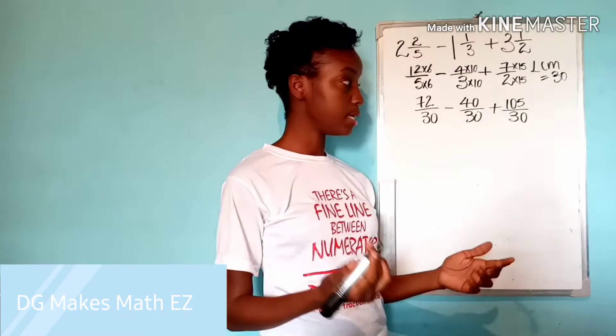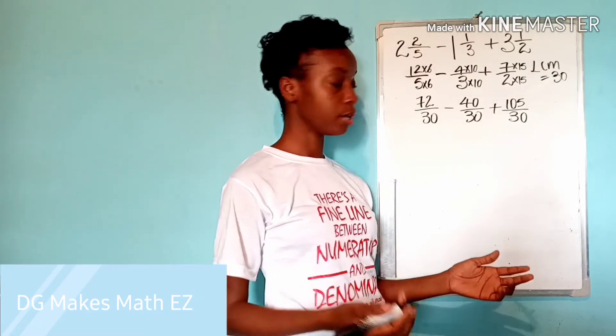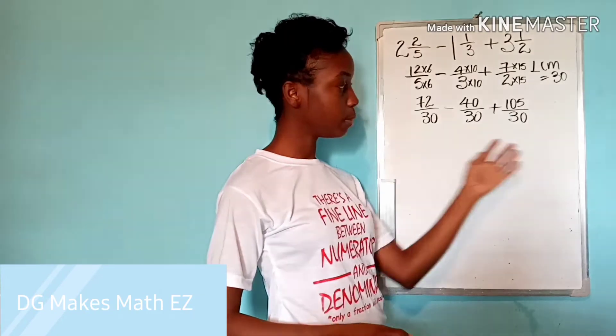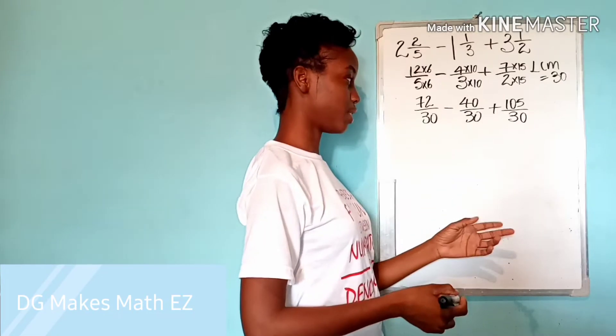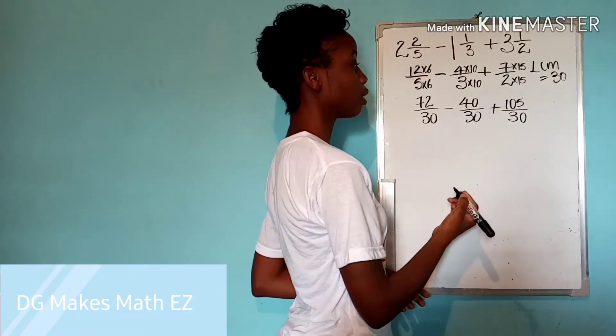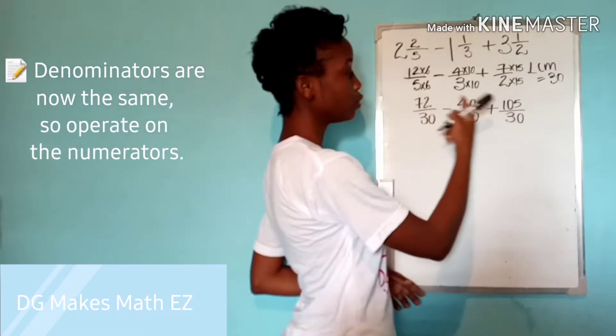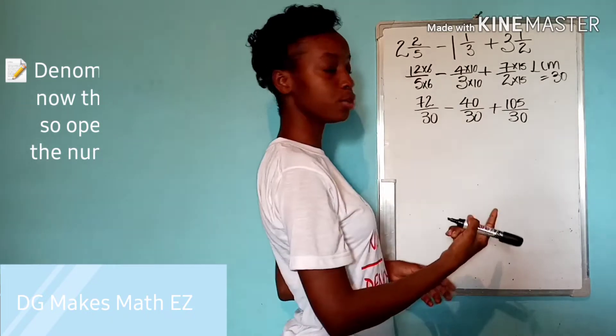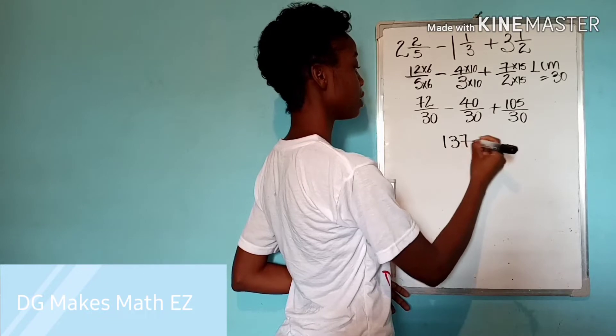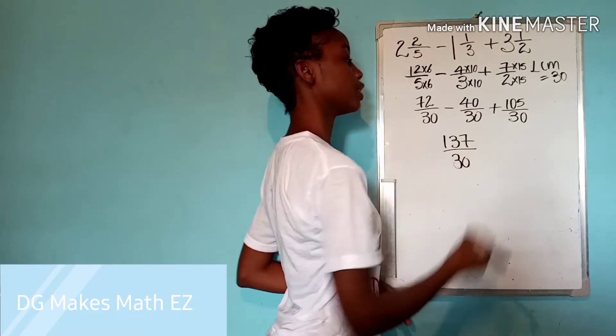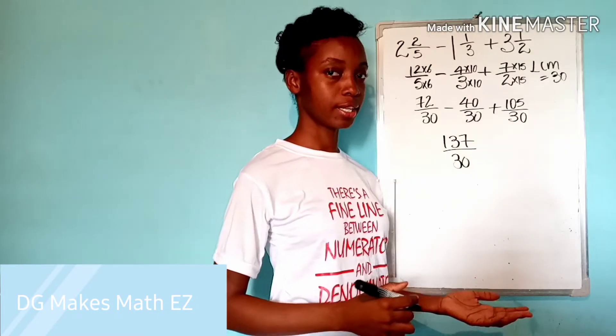Now our life is a bit or a lot easier because we now have the same denominators. So the only thing we now need to work on is our numerator. 72 minus 40 that will give you 32 plus 105 which will give you 137 over 30 and you can leave your answer like that.